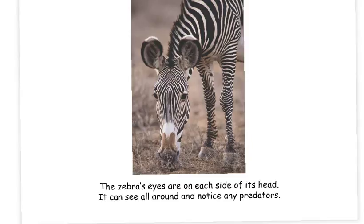In this example, you can see that the zebra's eyes are on the side of its head. This means it can see all around and see any predators coming in enough time to run away.